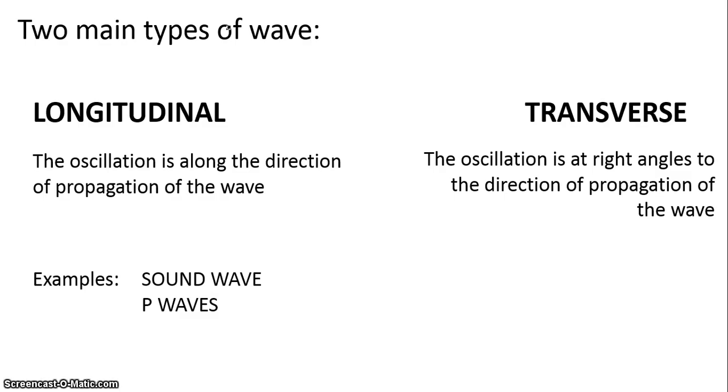Examples of longitudinal waves include sound waves and P waves or the pressure waves that we get from earthquakes. Some examples of transverse waves include electromagnetic waves, the surface of water waves and you could also include the S waves that we get from earthquakes.